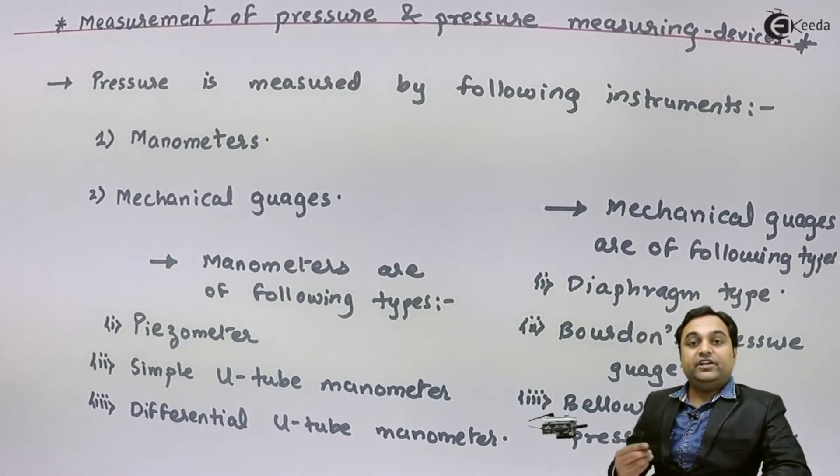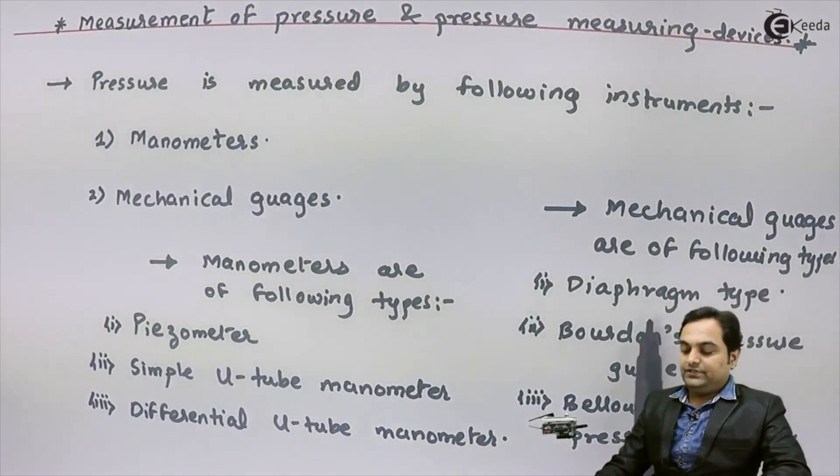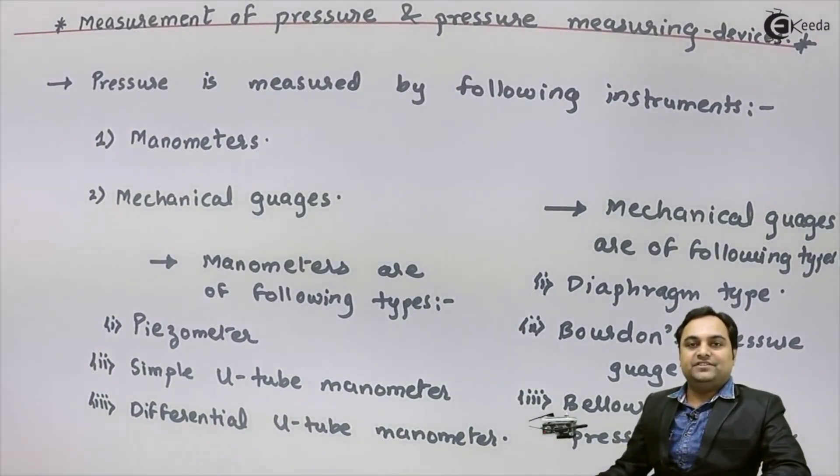In that we even have inverted u-tube manometer. Next, mechanical gauges are of following types: we have diaphragm type, Bourdon's pressure gauge, and bellows type pressure gauge. So these were some commonly used pressure measuring devices. I hope in this video we have understood the types of pressure measuring instruments.